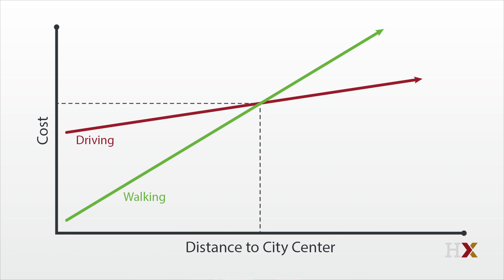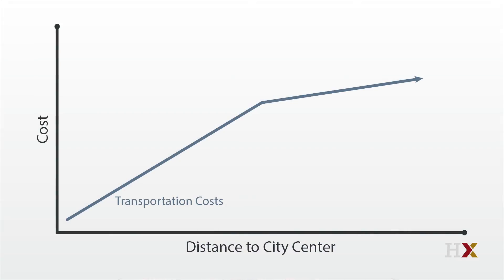There will exist a distance from the city center at which it makes sense to switch from walking to driving. If people aren't idiots — a standard but controversial economics assumption — they're going to choose the transportation technology that minimizes their total commuting costs. That means choosing the lower lines: walking when they live closer and driving when they live farther away. Total transportation costs will be the inner concave hull of the two lines.